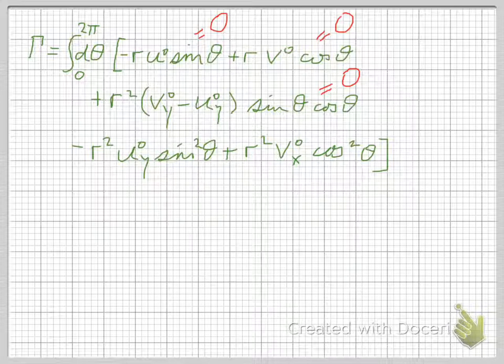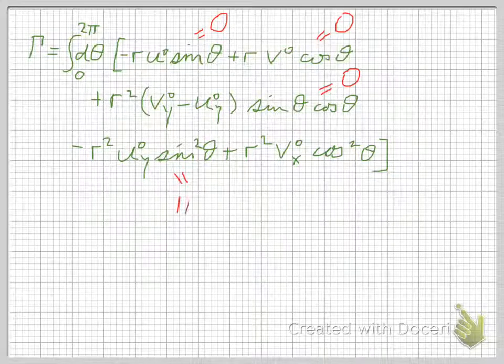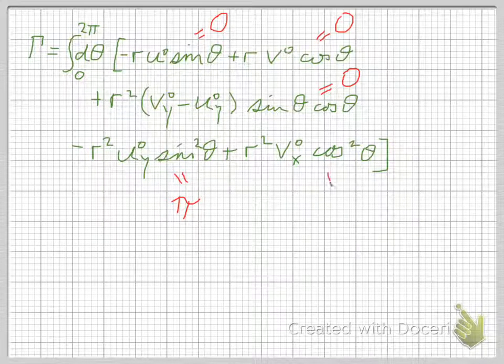They're both positive definite, and as a matter of fact, sin squared theta, integrated from 0 to 2pi, gives you pi. And cos squared theta, integrated from 0 to 2pi, also gives you pi.